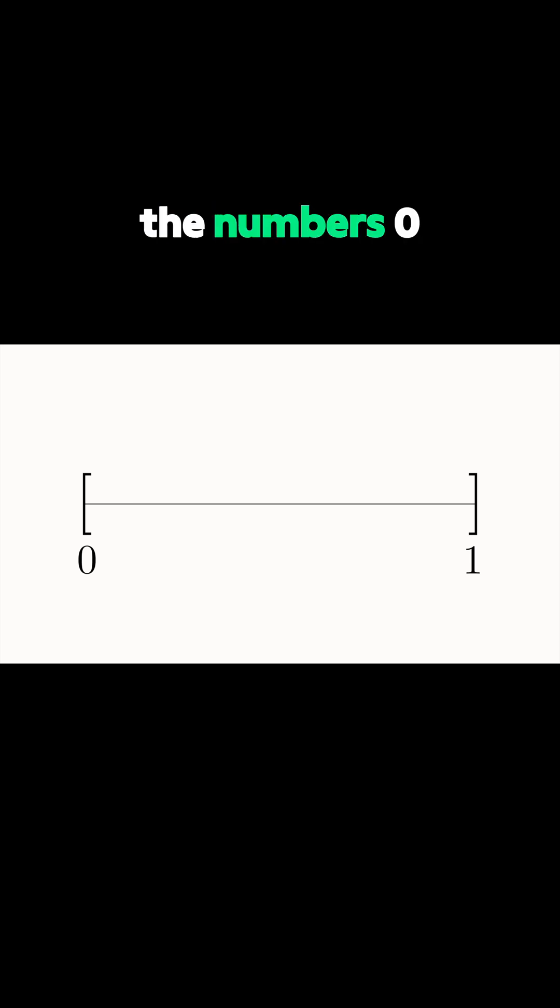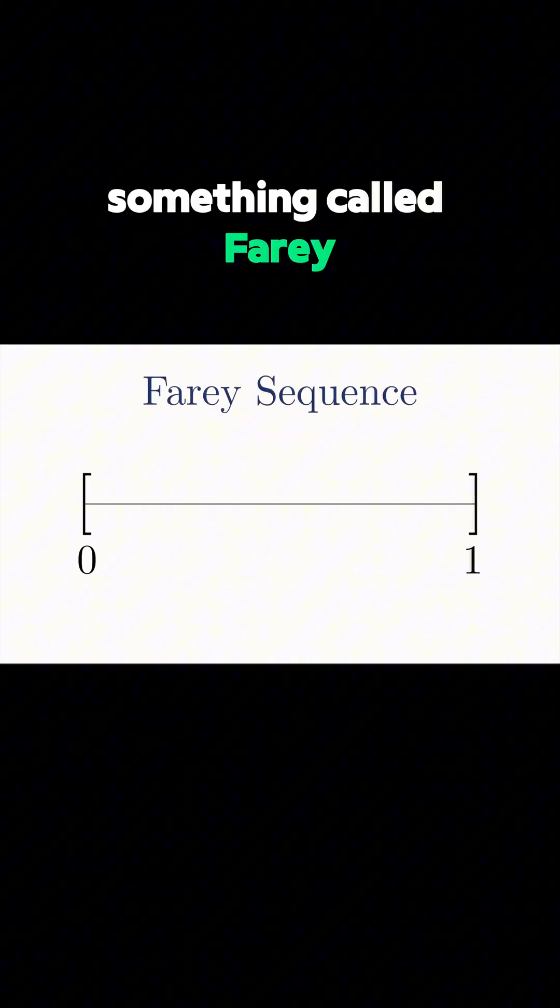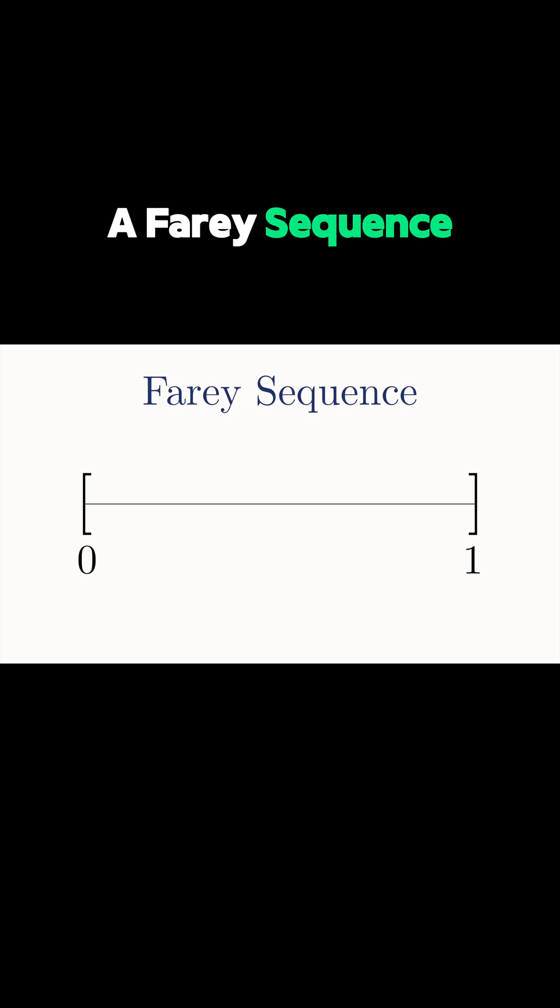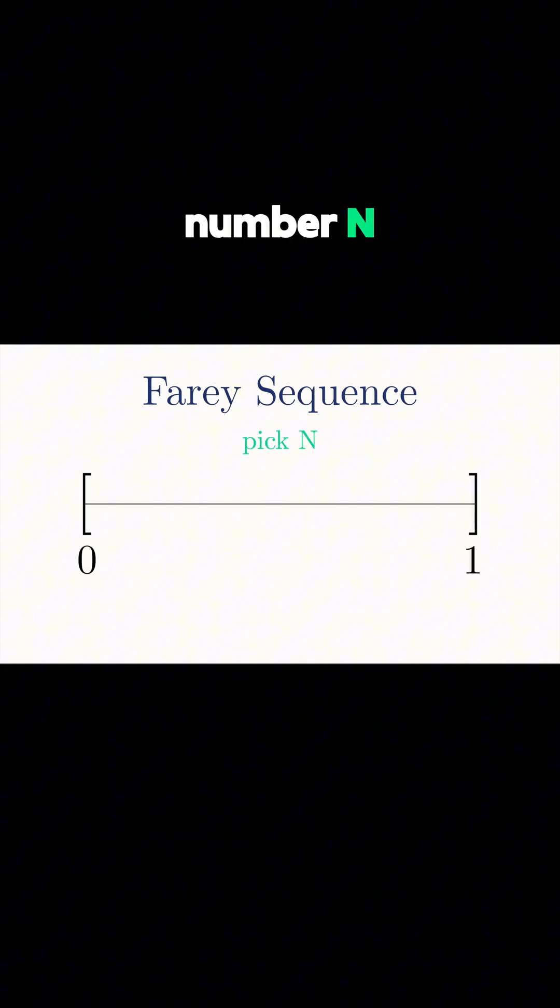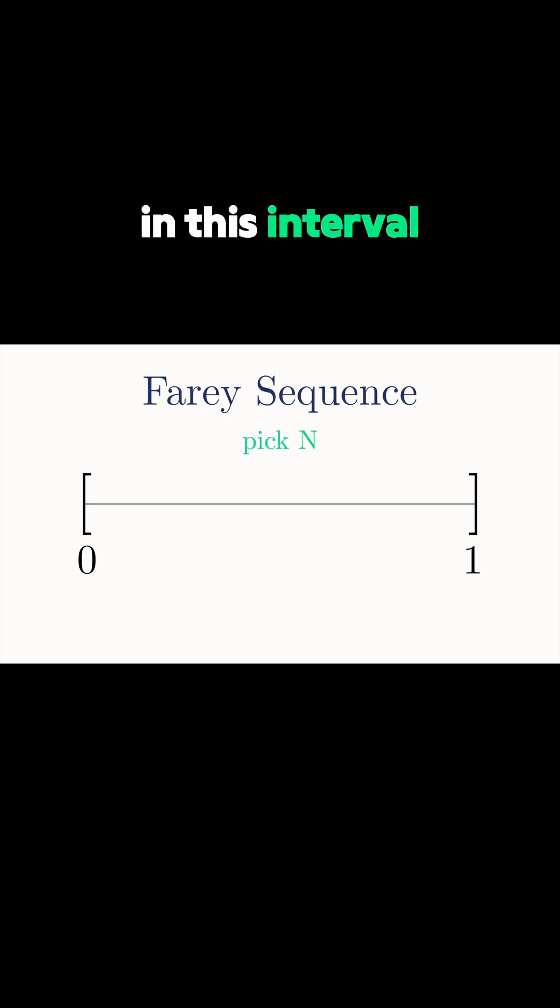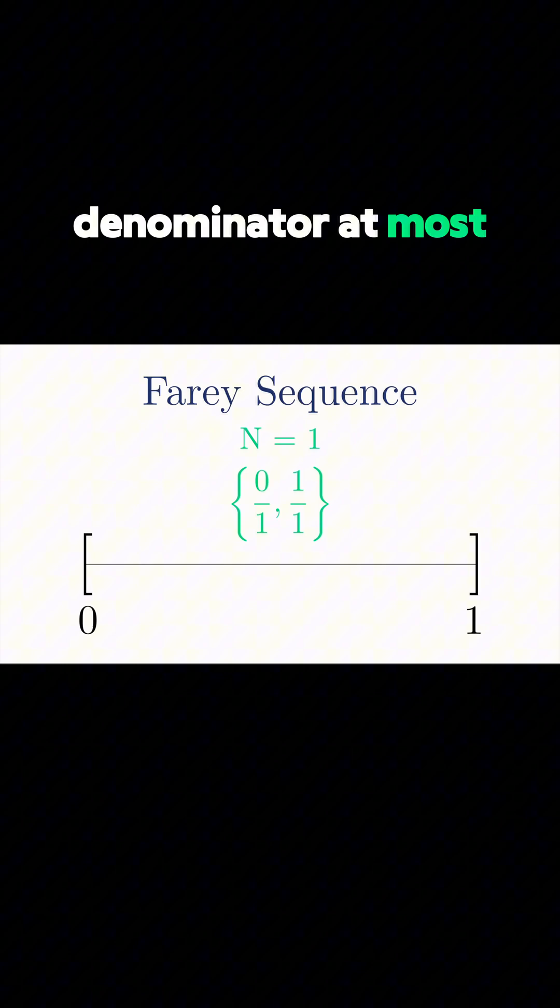We begin with the numbers 0 and 1. Ultimately, we want to write all rationals that exist in this interval. But a more humble initial goal is to form something called Farey sequences. A Farey sequence involves picking a number n and writing down all the fractions in this interval that have a denominator at most n.